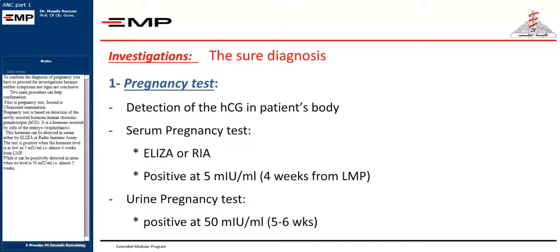To confirm the diagnosis of pregnancy you have to proceed for investigations, because neither symptoms nor signs are conclusive. Two main procedures can help confirmation: first is pregnancy test, second is ultrasound examination. Pregnancy test is based on detection of the newly secreted hormone human chorionic gonadotropin, HCG. It is a hormone secreted by cells of the embryo, trophoblasts. This hormone can be detected in serum either by ELISA or radioimmunoassay. The test is positive when the hormone level is as low as 5 mU/mL, almost 4 weeks from LMP, while it can be positively detected in urine when its level is 50 mU/mL, almost 5 weeks.